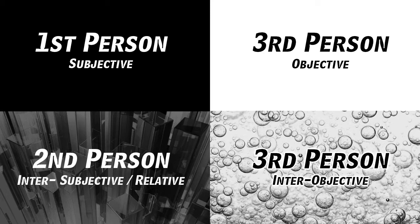So the distinction between facts and theories, and the distinction between subjective and relative. The idea is that every individual, every instance, is representing all four of these quadrants — that they tetra-arise, as we say in integral theory. The tetra-arising of the quadrants.